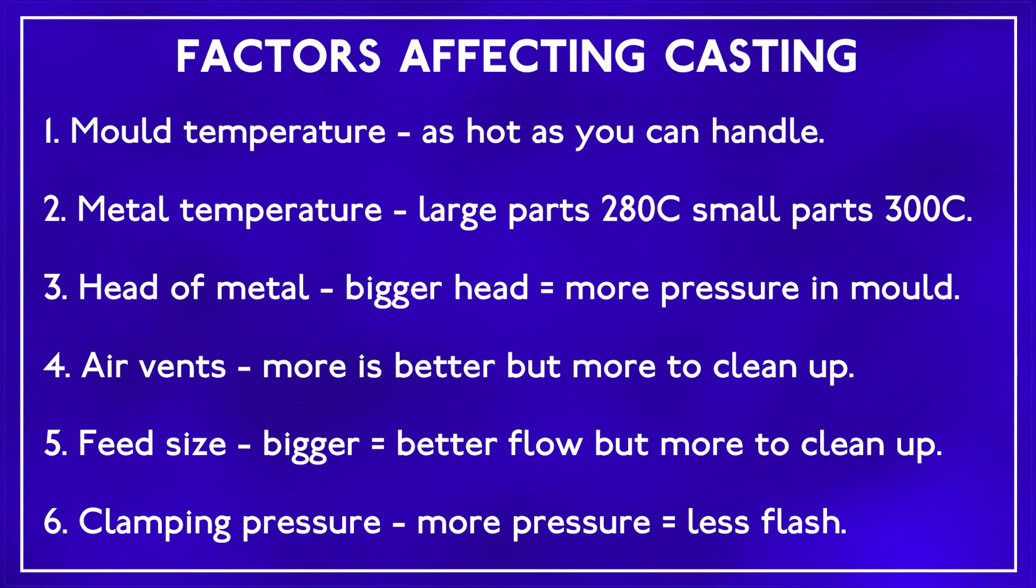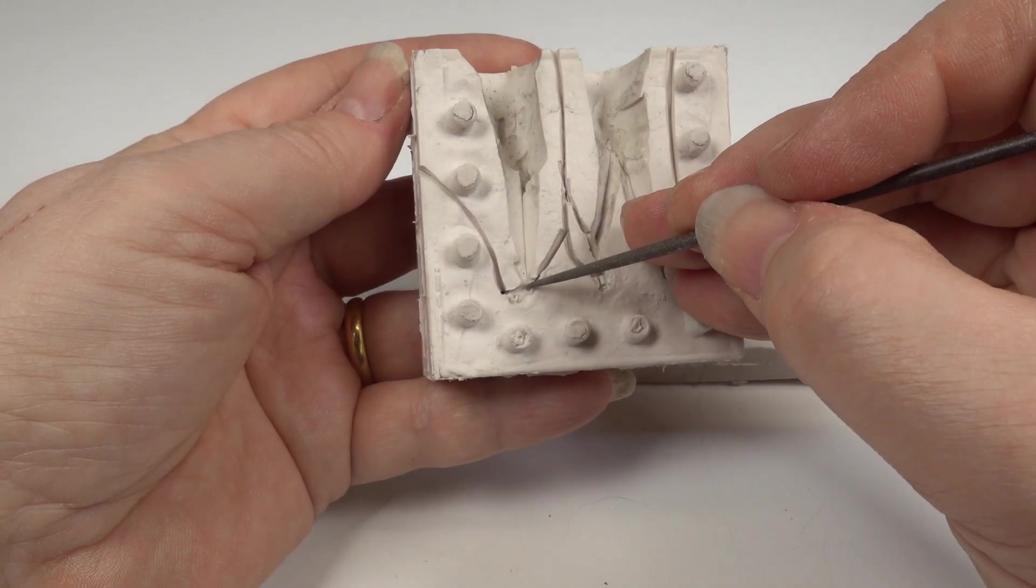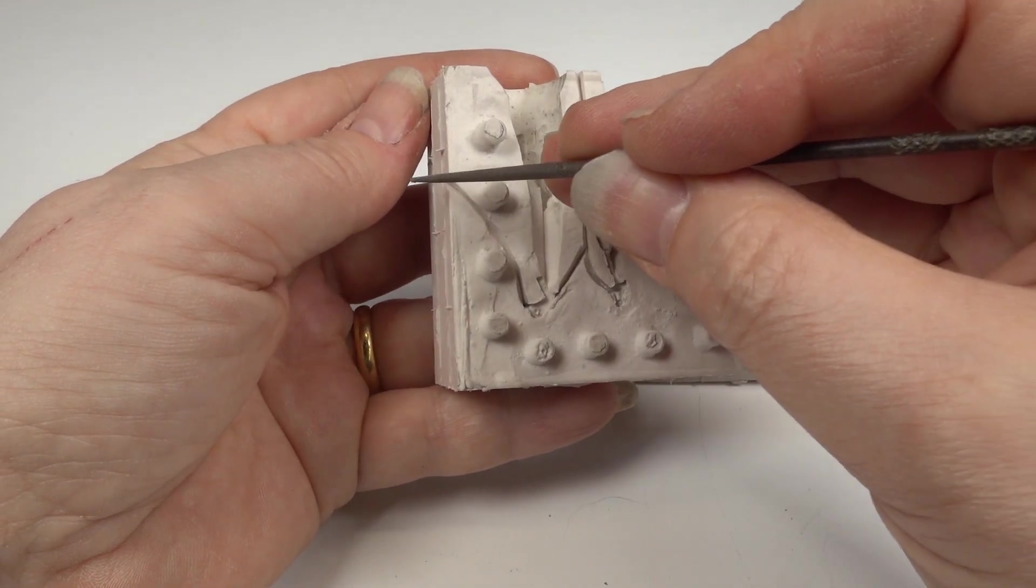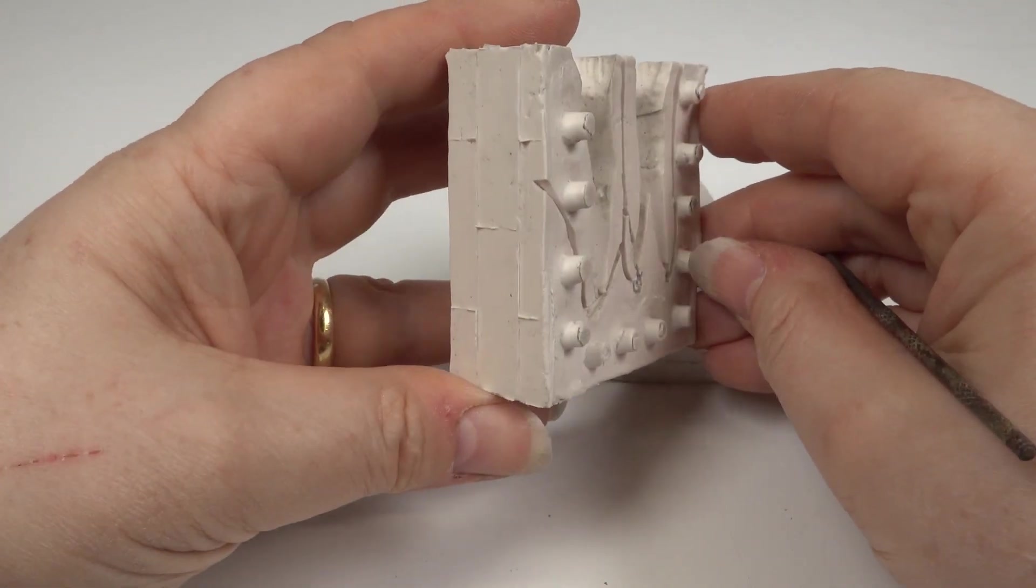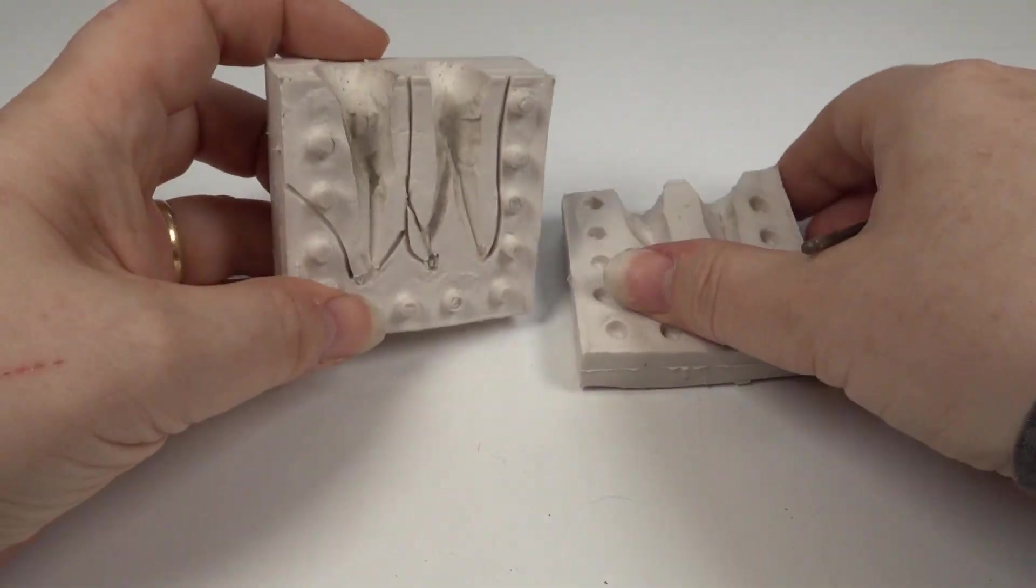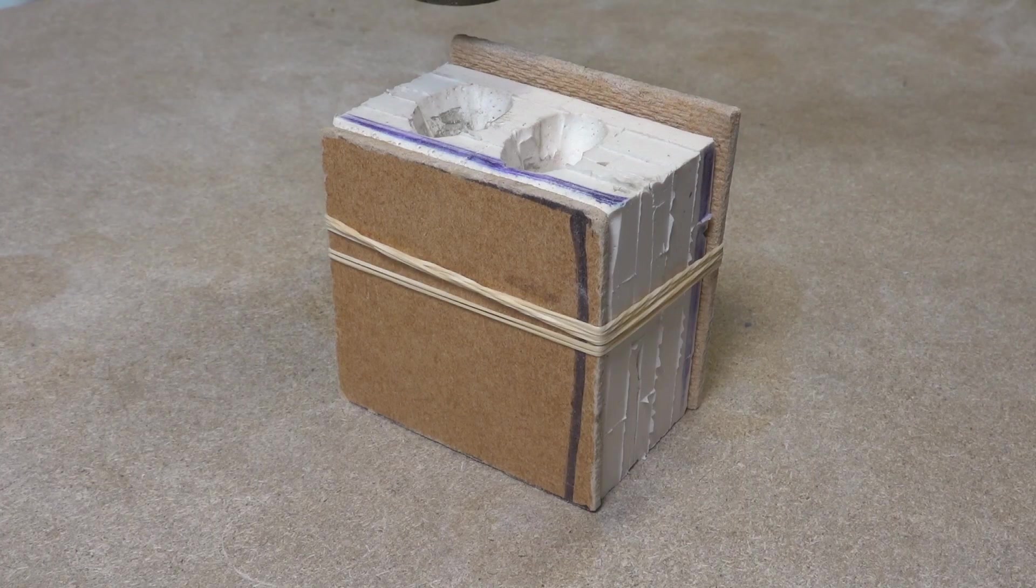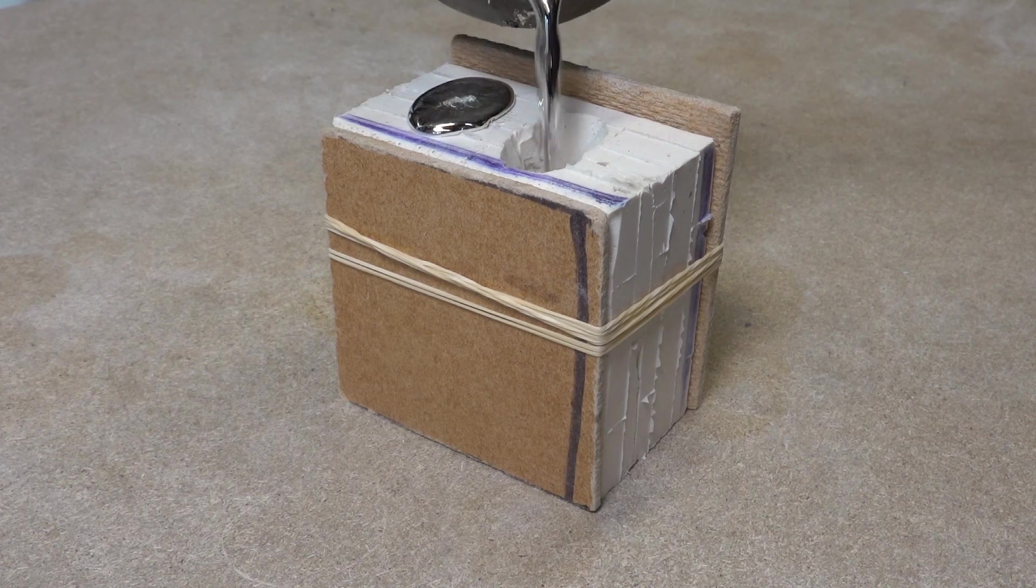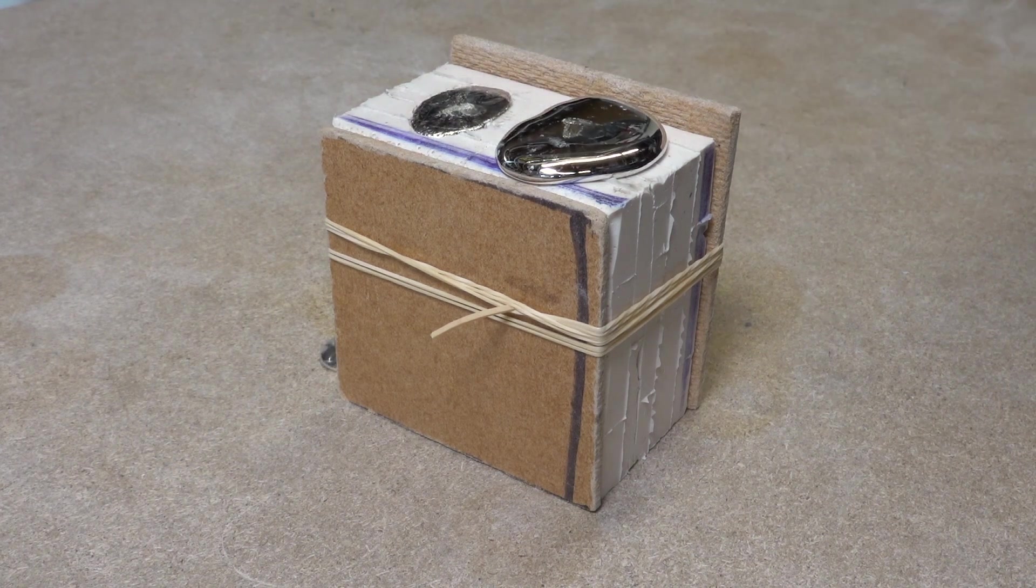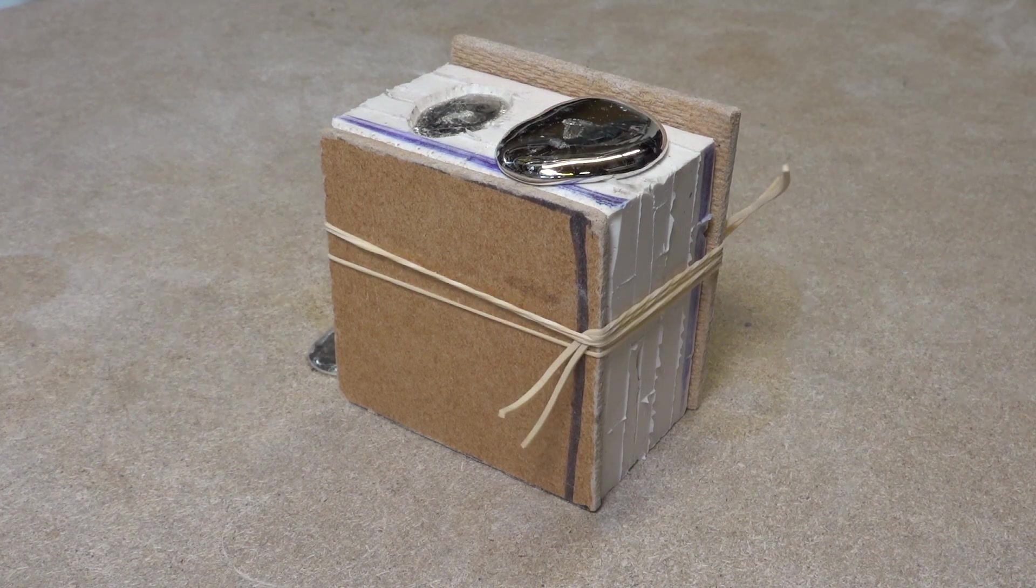Now let's see what happens when things go wrong. I cut this mould with an air vent going out the side rather than the top of the mould. I'm going to cast it without enough rubber bands holding it together. As I pour the metal in it escapes up the air vent melting and breaking the elastic bands. You can guess what happens next.